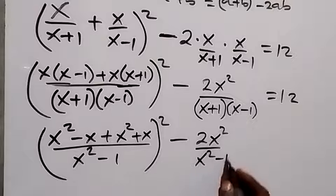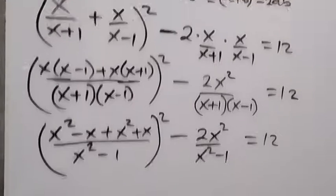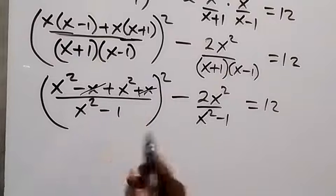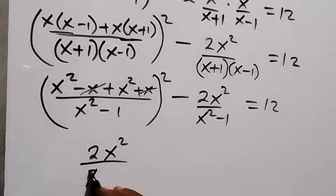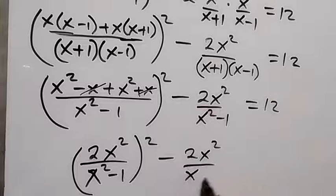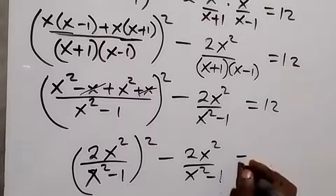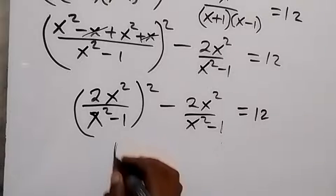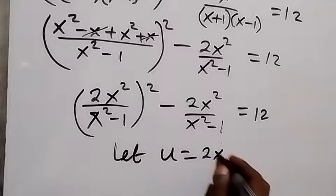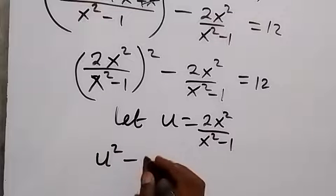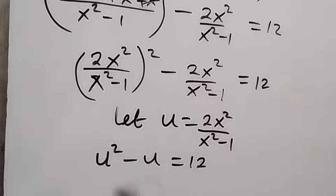So the denominator becomes x²-1. We have 2x² minus 2x², over x²-1, equals 12. The x terms cancel, leaving 2x² over x²-1. We can see that 2x²/(x²-1) appears twice, so we use a substitution. Let u equal 2x² over x²-1. Then we can rewrite this equation as u squared minus u equals 12.